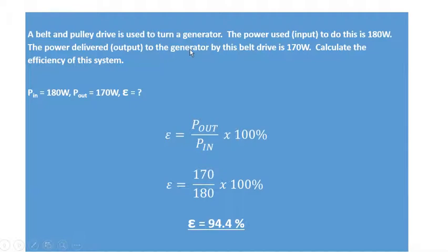Looking at efficiency, we've got the drive system to turn a generator. The input is 180 watts, but the power delivered to the generator by the belt is 170 watts. So we're losing 10 watts. So what's the efficiency?